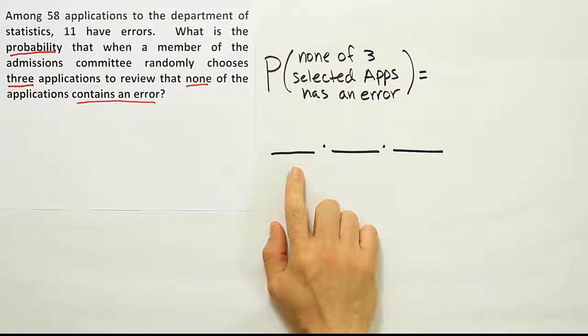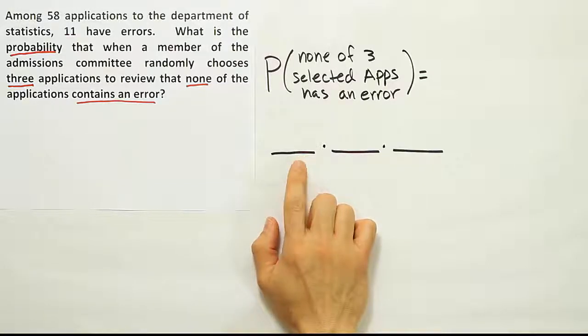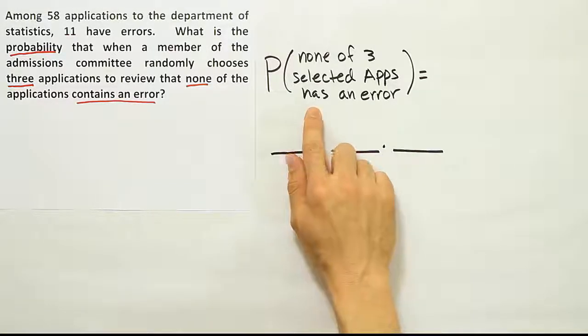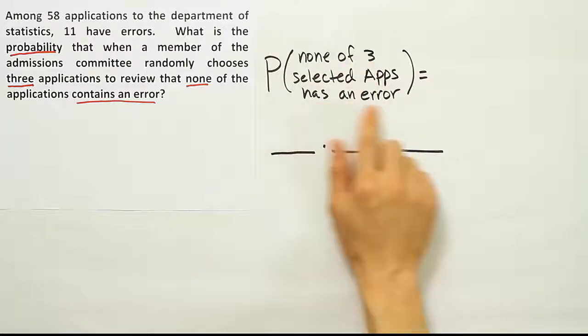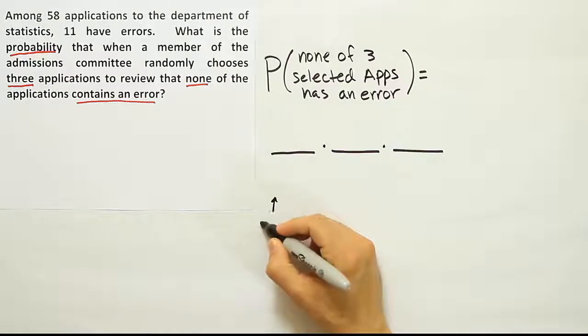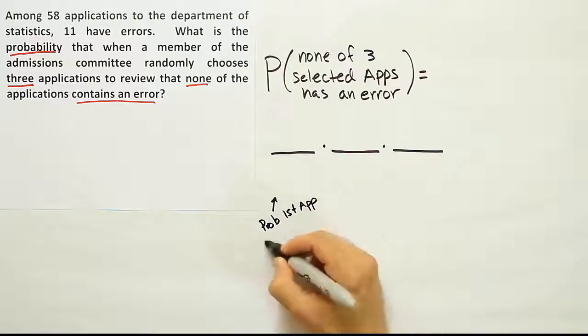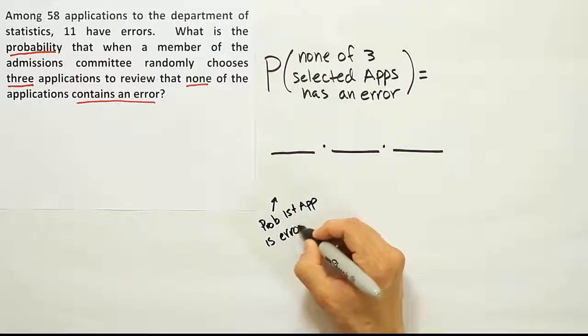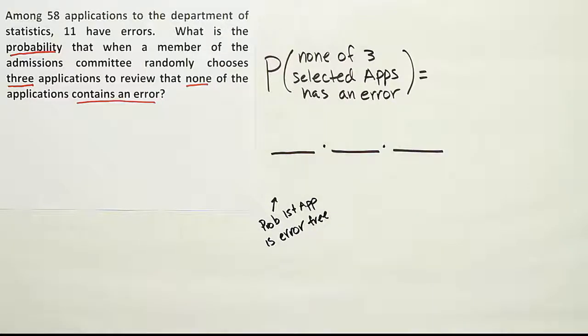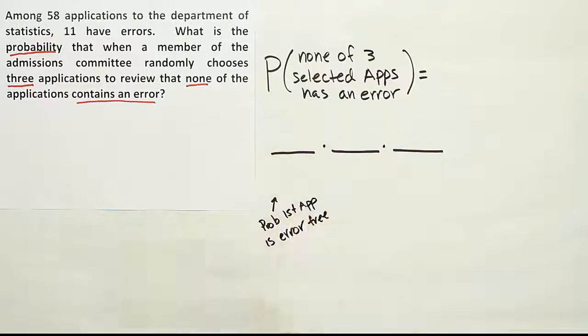The next step is to figure out what these spaces represent. This would be the first application that's being selected, and I want it to turn out so that that application does not have an error. So this is the probability the first application is error free. I need to put the number of applications that do not have errors over the total number of applications.